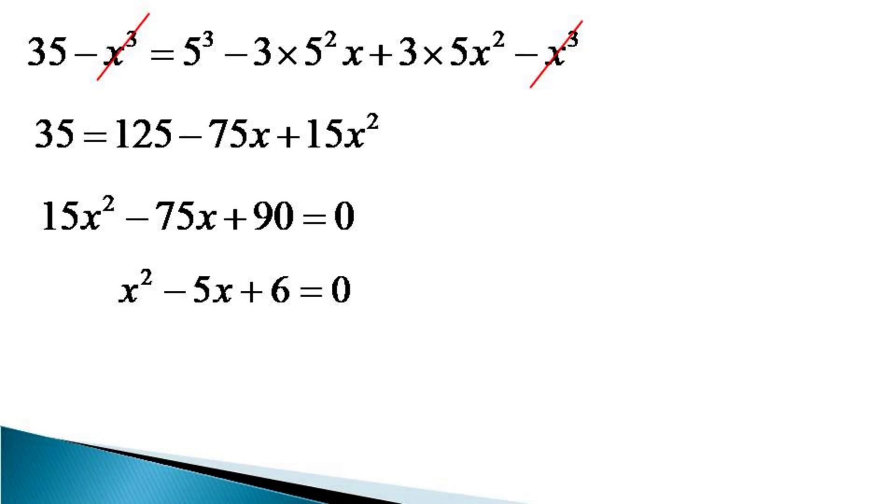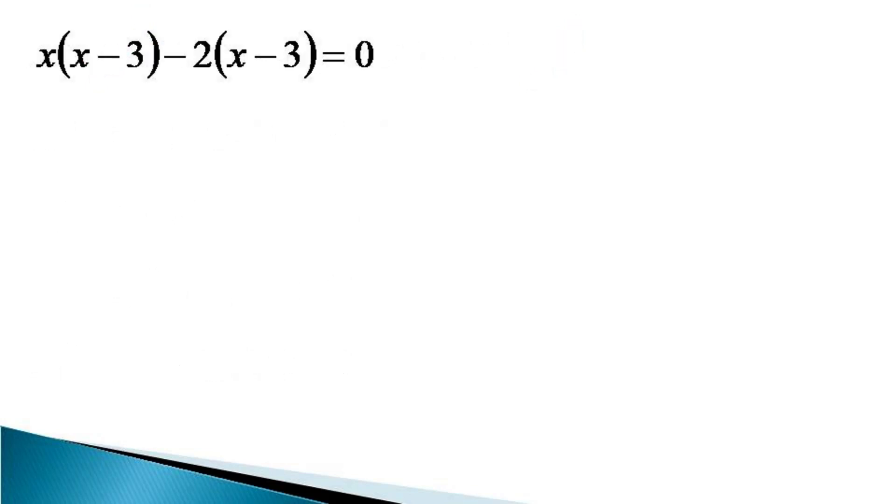This is a simple quadratic equation and can be solved by the method of factorization. To do this, we represent the equation as x square minus 3x minus 2x plus 6 is equal to 0. We can take x common from the first two terms and minus 2 common from the last two terms to get x times x minus 3 minus 2 into x minus 3 is equal to 0.